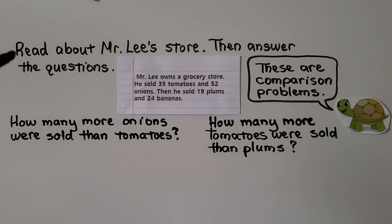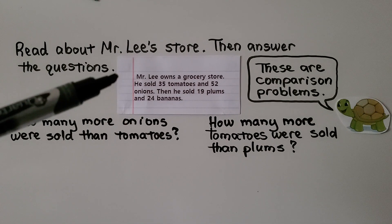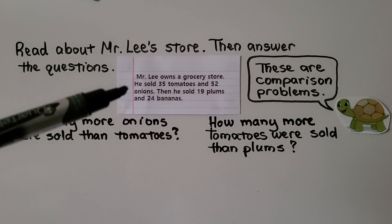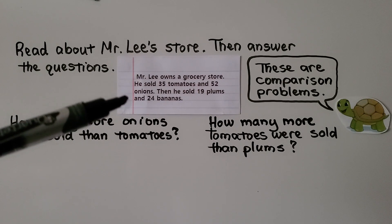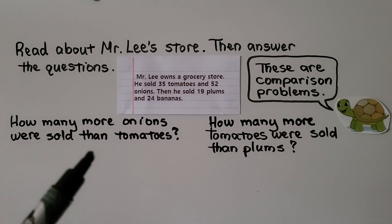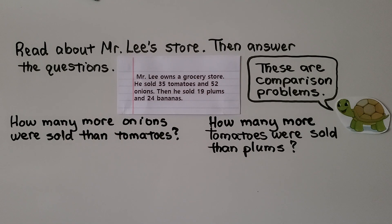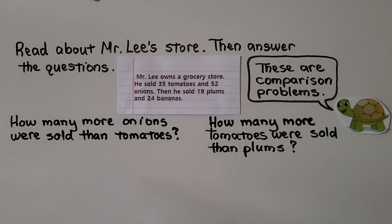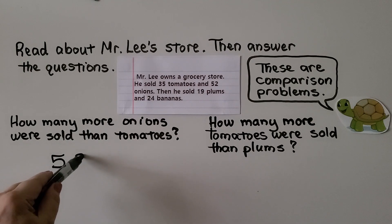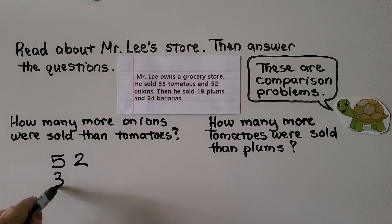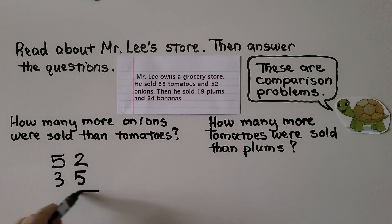Here it's telling us to read about Mr. Lee's store, then answer the questions. Mr. Lee owns a grocery store. He sold 35 tomatoes and 52 onions, then he sold 19 plums and 24 bananas. This is a comparison problem: how many more onions were sold than tomatoes? We're comparing 52 onions to 35 tomatoes.